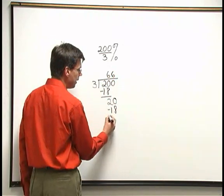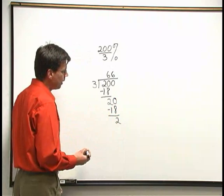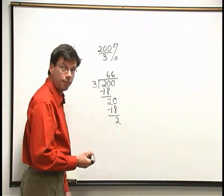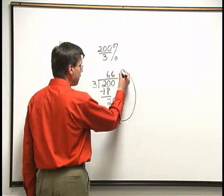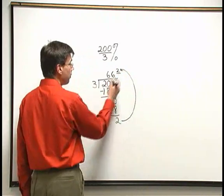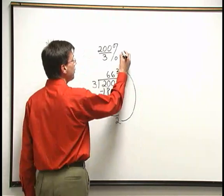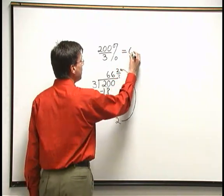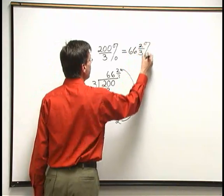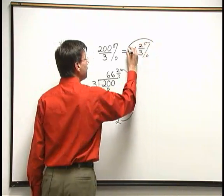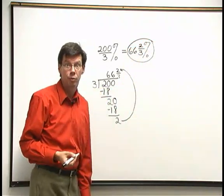3 goes into this 20 6 times. 6 times 3 is 18. And subtract. 20 minus 18 is 2. Now I'm going to write my remainder in fraction form. So the 2 that we have left, we write up above over the 3 out in front. I have 66 and 2 thirds. So for my percent, we have 66 and 2 thirds percent. Let's take this 66 and 2 thirds percent and put it back into the original problem.